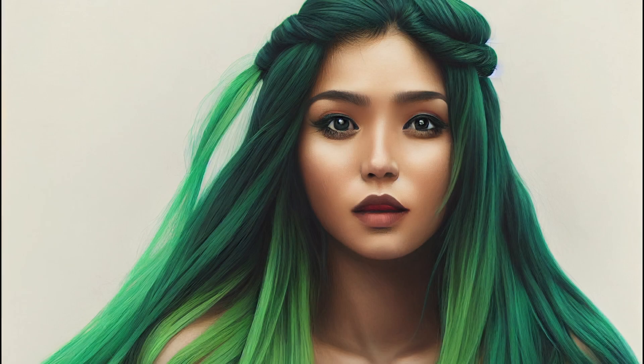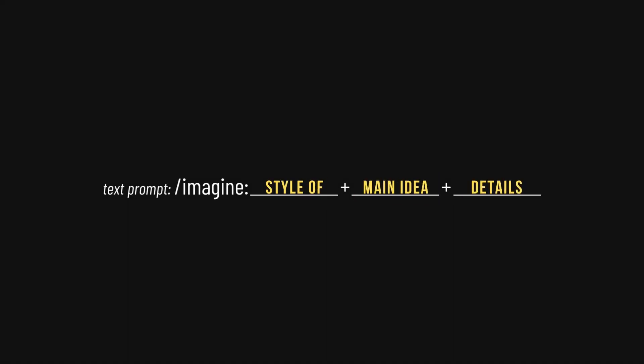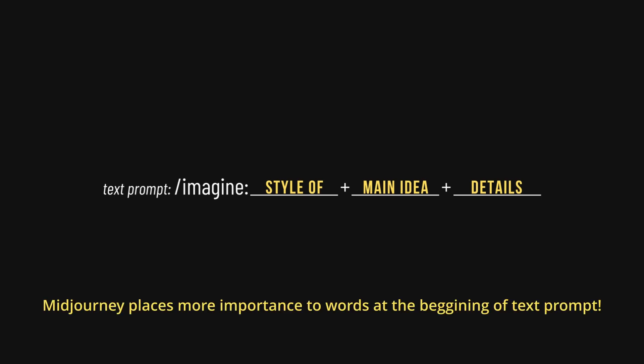Here is the result we get by including only our main idea. I'm running the different parts of our prompt separately so you can see how adding each part impacts our end results. I'm overall happy with the composition mid-journey is putting out here. As a general rule, we add the style we're looking for at the very front of our text prompt because mid-journey places more importance on words at the beginning of the prompt than words at the end.